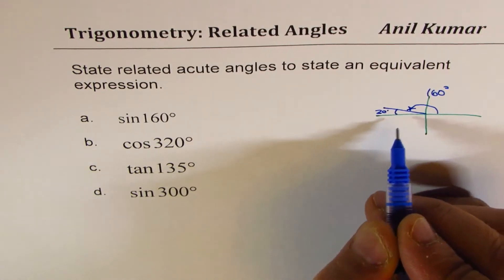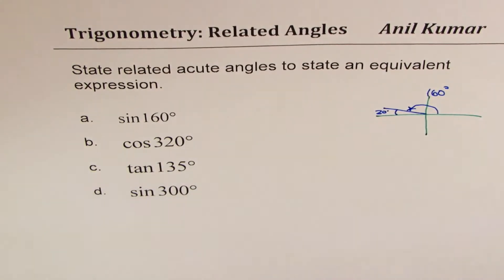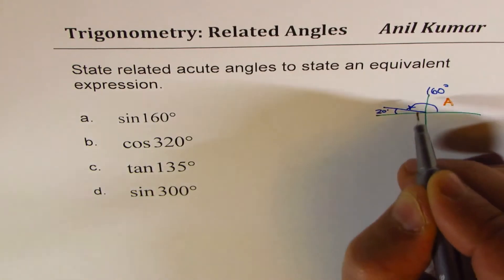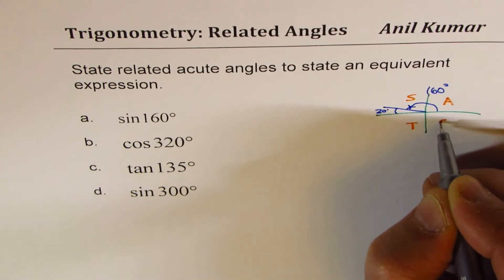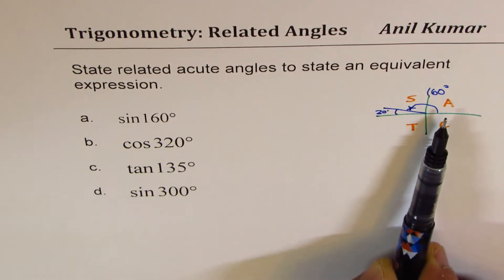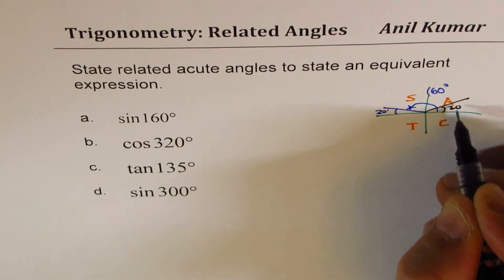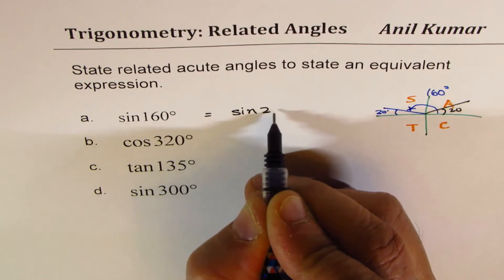180 minus 160, so the acute angle is 20 degrees. Secondly, we know that all are positive in quadrant 1, sine is positive in quadrant 2, tan in 3, and cos in 4. Since the sine value should be positive, the acute angle in this quadrant will be 20. We could write straightaway this as sine of 20 degrees.